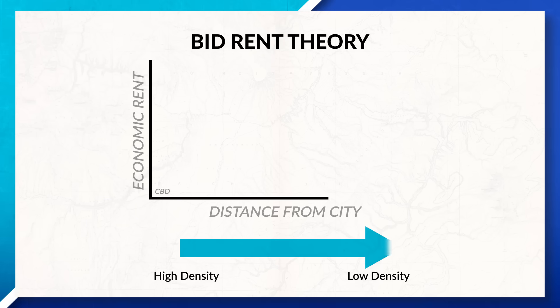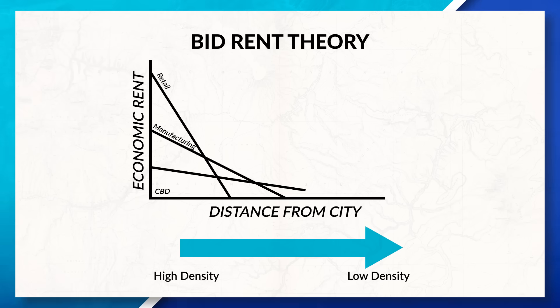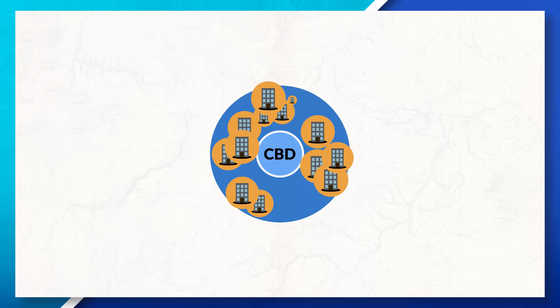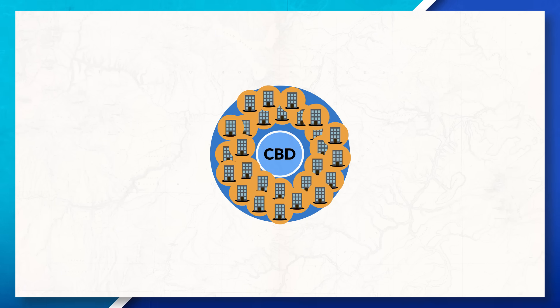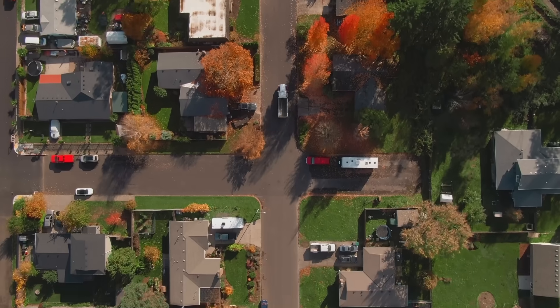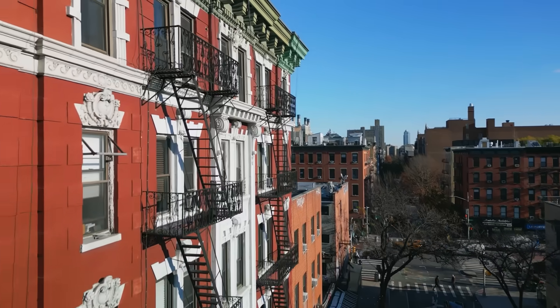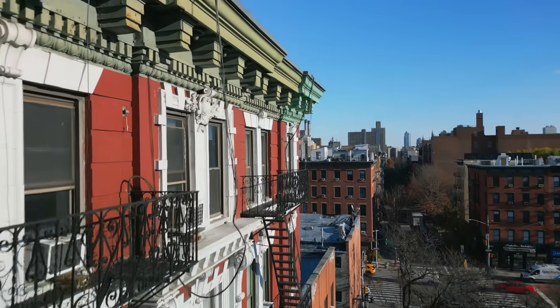Speaking of different settlements and their locations, we can also see the bid-rent theory at play, a concept last discussed in the Unit 5 video. As you move farther away from the central business district, the cheaper the land gets, which impacts the spatial layouts of settlements. Places closer to the CBD often see more buildings close together with expansion happening upwards, while places farther away often expand horizontally and are more dispersed. Homes farther from the CBD often have a front yard and backyard with access to more green spaces.